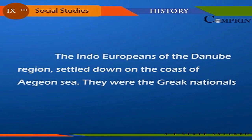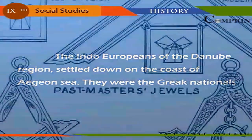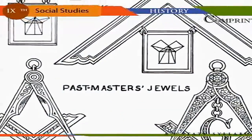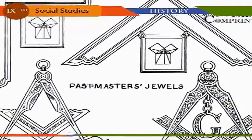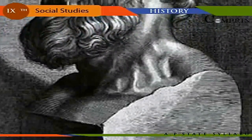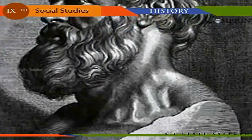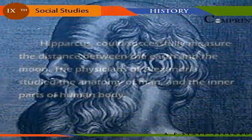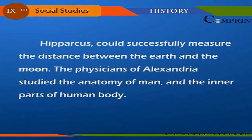Greek Civilization: The Indo-Europeans of the Danube region settled down on the coast of the Aegean Sea — these were the Greek nationals. The ancient Greeks wrote on science and mathematics and made many experiments. Euclid and Pythagoras brought revolution in the field of geometry. Hippocrates was known as the father of modern medicine, and Hipparchus could successfully measure the distance between the earth and the moon.